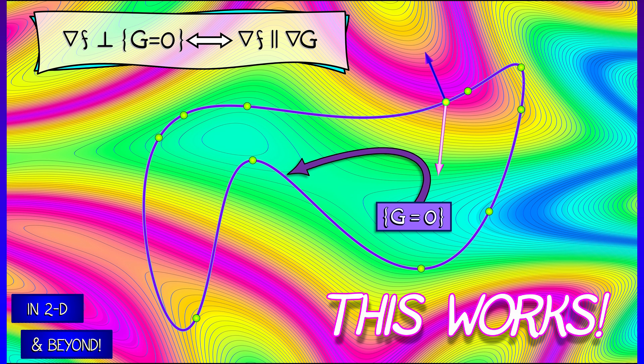If you consider where the tangencies between the constraint set and the level sets of the function to be optimized, what does it look like when you plot the gradient of f and the gradient of g? You will see that these vectors are parallel precisely where there's a tangency between the level sets.